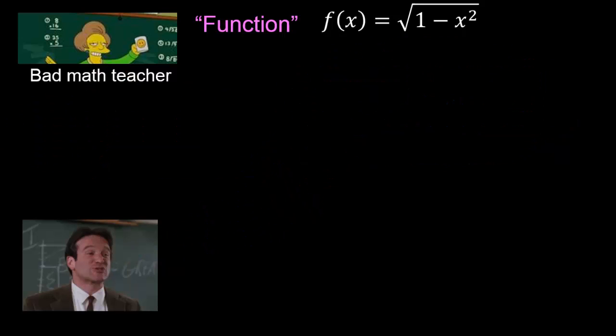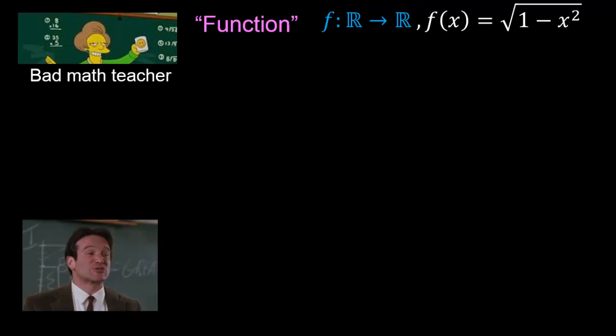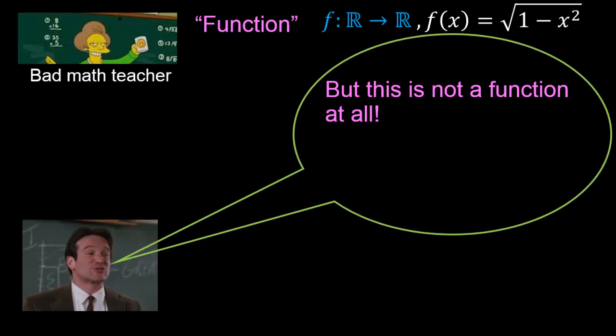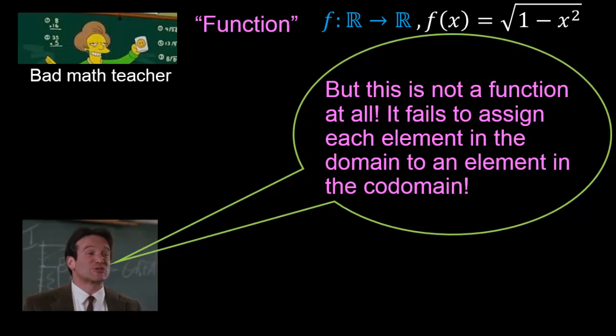Now let's try to write down this function properly. The function f has domain ℝ and co-domain ℝ, and it maps each element x in the domain to the square root of 1 minus x squared. The problem, though, is that this is not a function at all — it fails to assign each and every element in the domain to exactly one element in the co-domain.